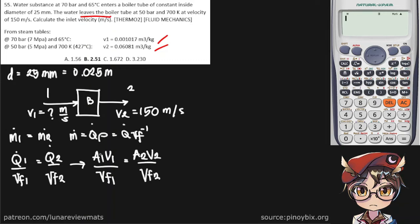As for the area, we're given a constant diameter of 25 millimeters, but since it is constant, well a sub 1 is going to be the same as a sub 2, so these actually cancel out.